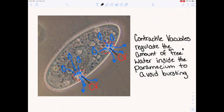This mechanism enables those contractile vacuoles to regulate the amount of free water inside the paramecium. This helps it to avoid swelling up to a point where it's going to burst, and this is called osmoregulation.